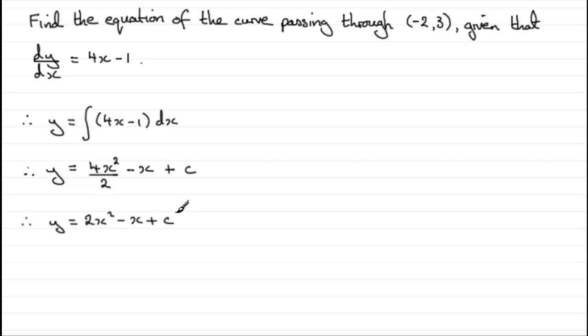Now to work out this constant of integration, plus c, I need to know a fact relating the x and the y. Well I do. Because the equation of the curve passes through the point (-2, 3). So in other words, when x is -2, y would be 3.